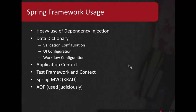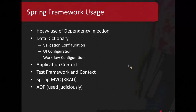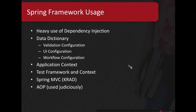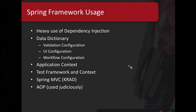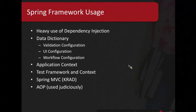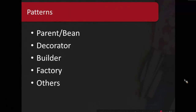We use Spring pretty heavily in KS and in Rice. We use dependency injection a lot — pretty much most of our application configuration is all dependency injection. The data dictionary is completely Spring-based and does validation, UI, and workflow configuration. The application context is all dependency injection. The test framework and context is Spring-based. We use Spring MVC in KRAD. We use a little bit of AOP in the service layering, but pretty judiciously. Some of the patterns we use are parent bean, decorator, builder, factory, and a few others.